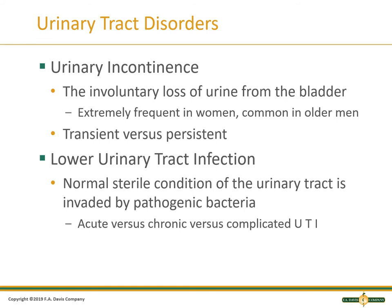Urinary incontinence is the involuntary loss of urine from the bladder — frequent in women, common in older men. With women, especially those who've had a hysterectomy, there isn't that pelvic support, leading to incontinence. Muscle atrophy as we age and childbirth are also contributing factors — stress incontinence is common. With men, prostate hypertrophy or prostatitis can cause incontinence. You need to assess whether it's transient or persistent, how often it's occurring, and whether they know it's coming or not.